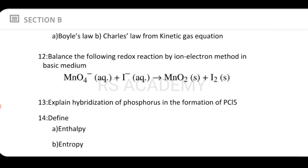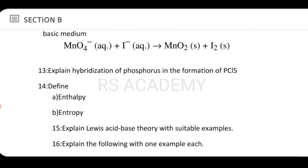Next, balance the following redox reaction by the ion-electron method in basic media. Using the ion-electron method in basic media, we balance the given equation. Next, explain the hybridization of phosphorus in the formation of PCl₅.